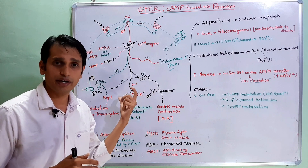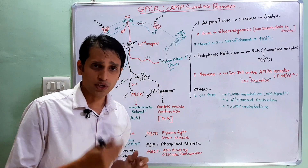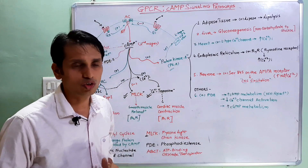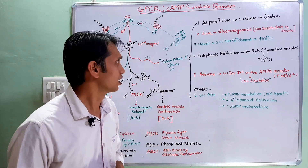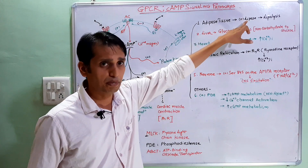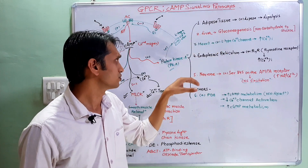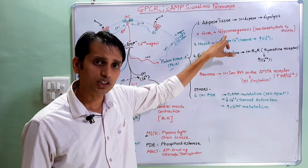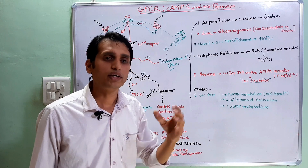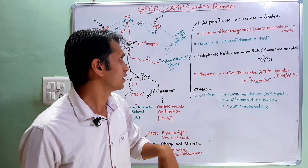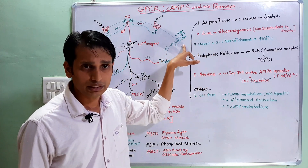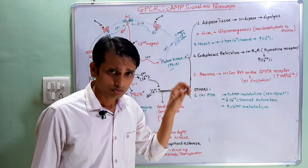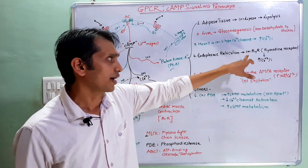Cyclic AMP also activates protein kinase A enzyme, which is present in various tissues and cells. In adipose tissue, protein kinase A activates lipase enzyme, causing lipolysis. In the liver, protein kinase A increases the gluconeogenesis process — where glucose is formed from non-carbohydrate sources like proteins or lipids. In the heart, protein kinase A opens L-type calcium channels, increasing intracellular calcium ion concentration.